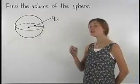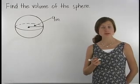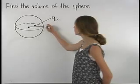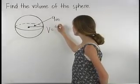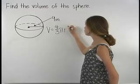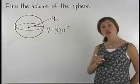Notice that the figure shown here is a sphere. To find the volume of a sphere, start with the formula for the volume of a sphere, which is volume equals 4 thirds pi times the radius cubed, or v equals 4 thirds pi r cubed.